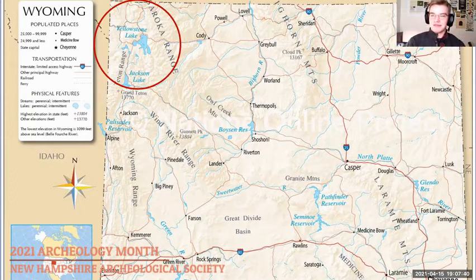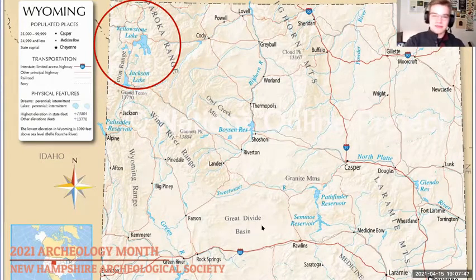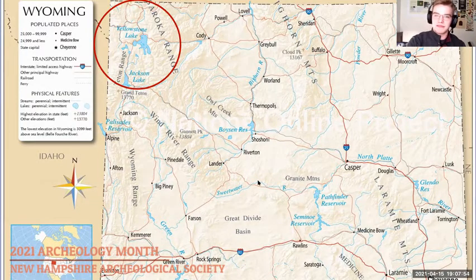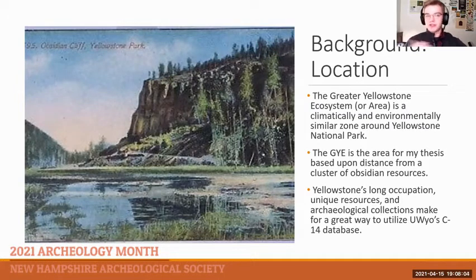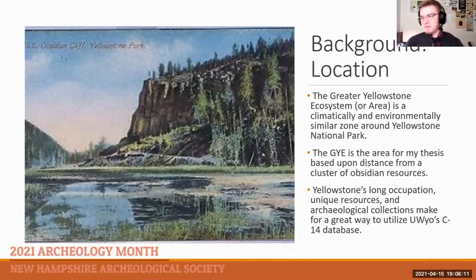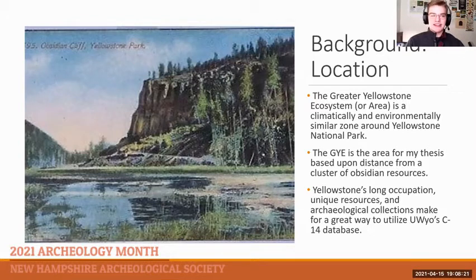In doing so, I hope to see how direction, distance, and changes in population over time affect their distribution. This is going to be done using both the resources of the state of Wyoming and the Yellowstone National Park system. In case anyone is unsure exactly where Yellowstone is, it's up in the corner of Wyoming — and there's a little map that puts that in relation to the rest of the states.